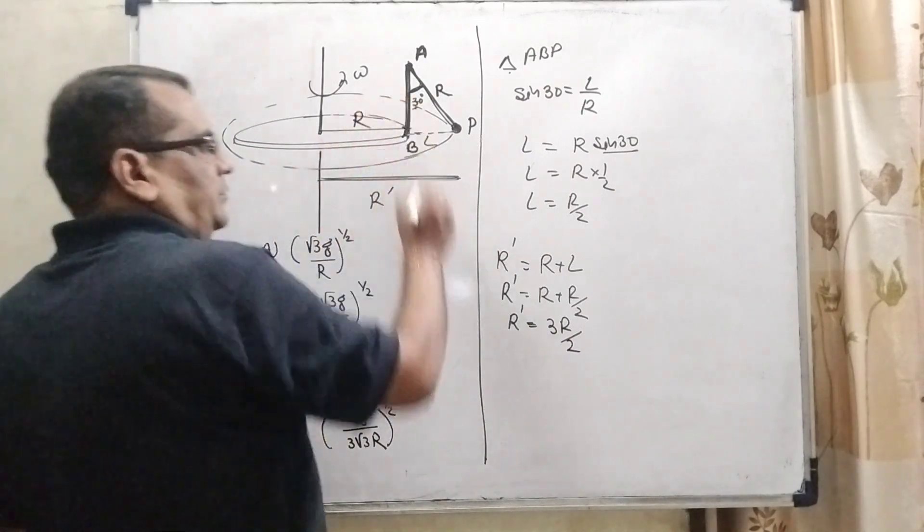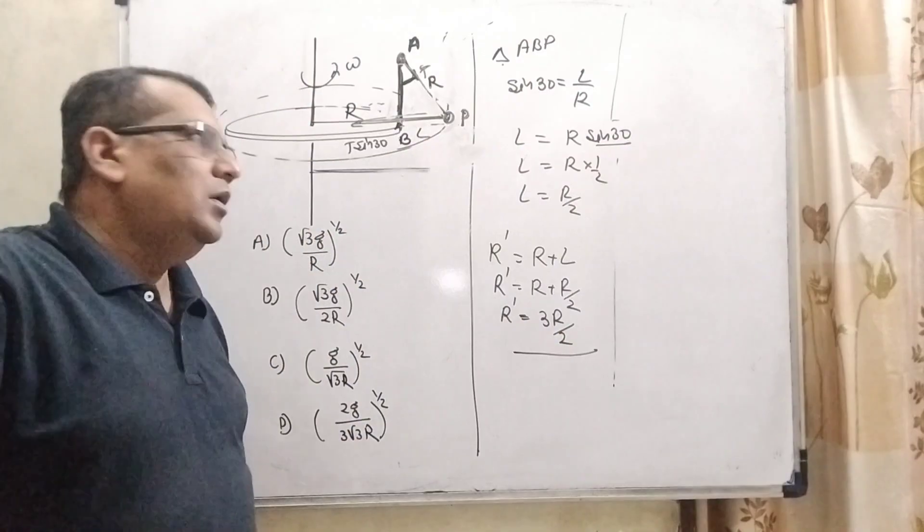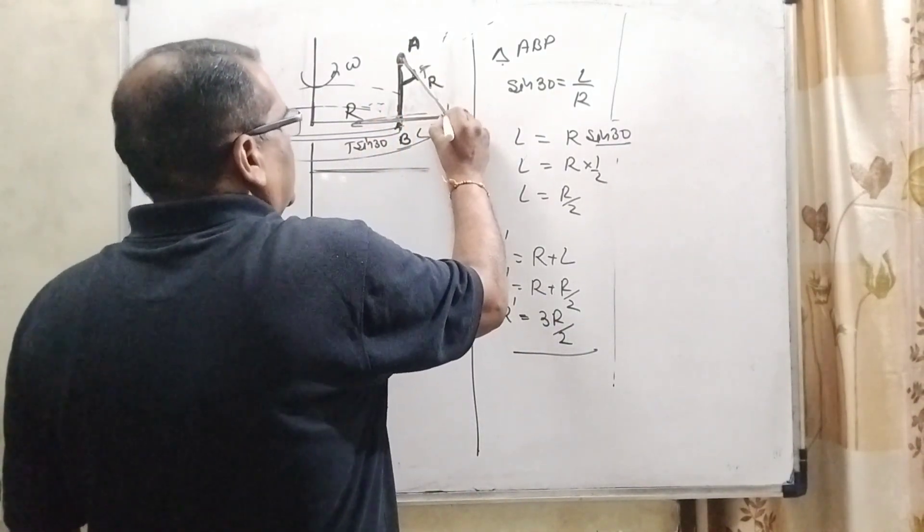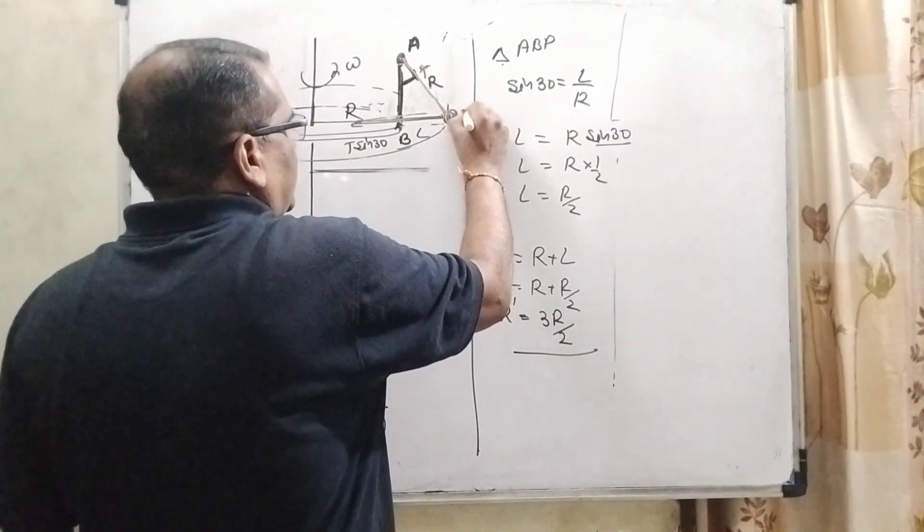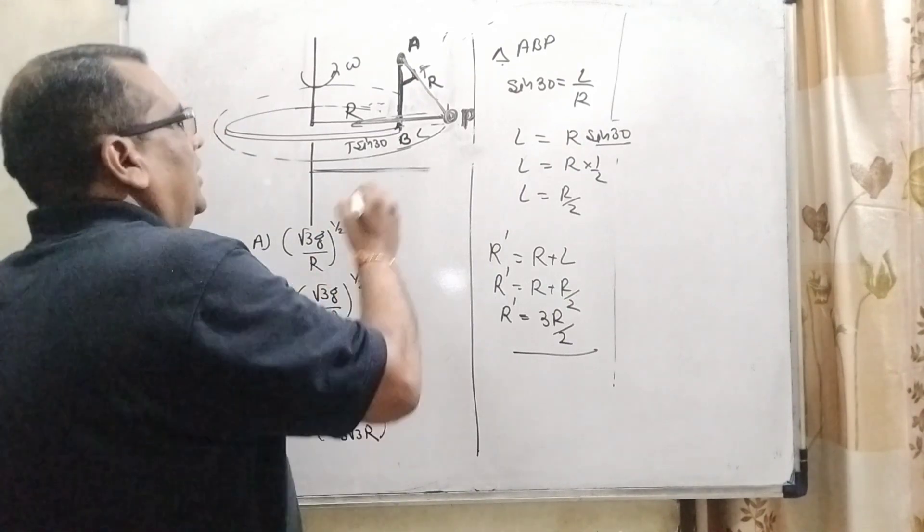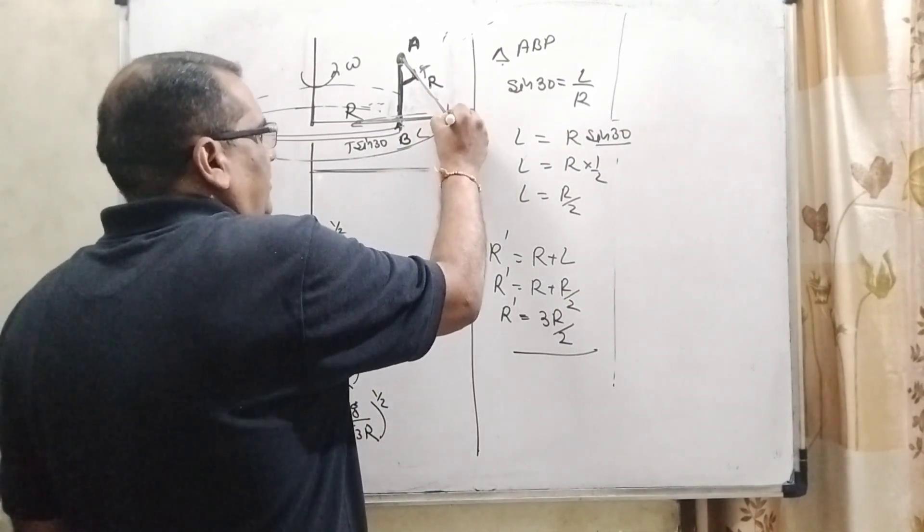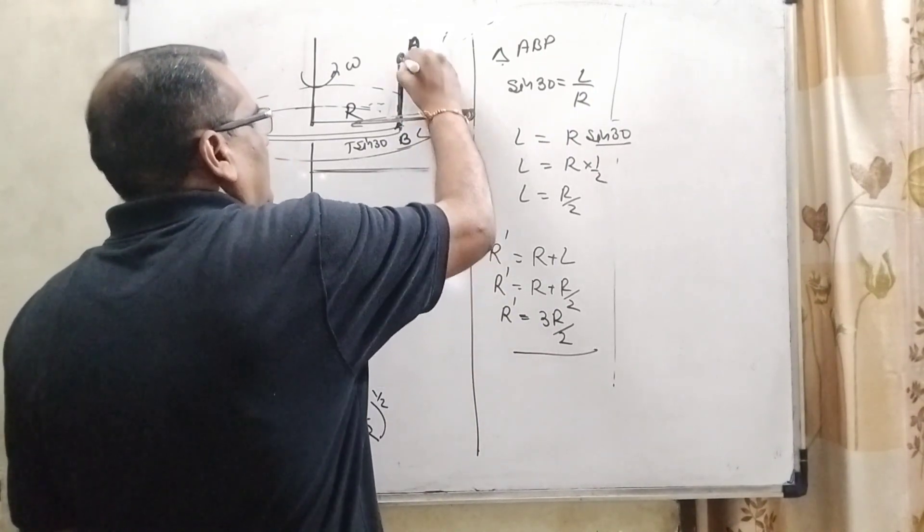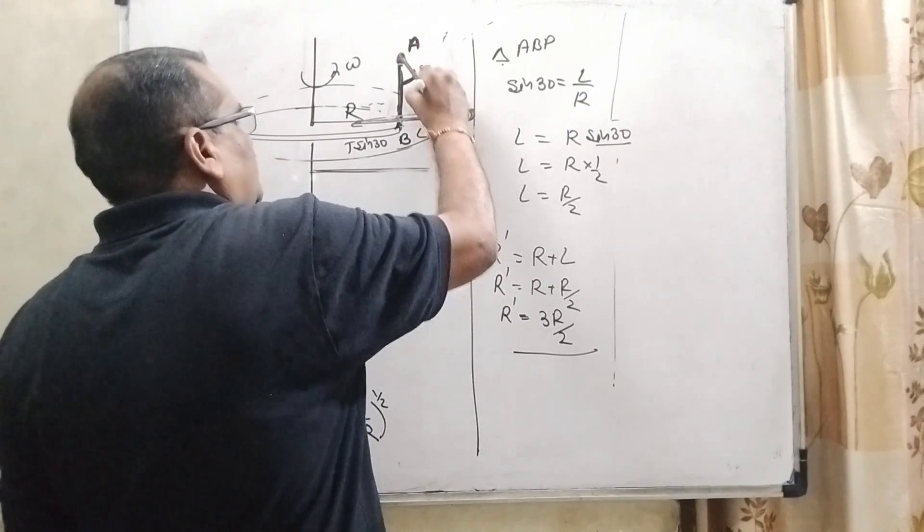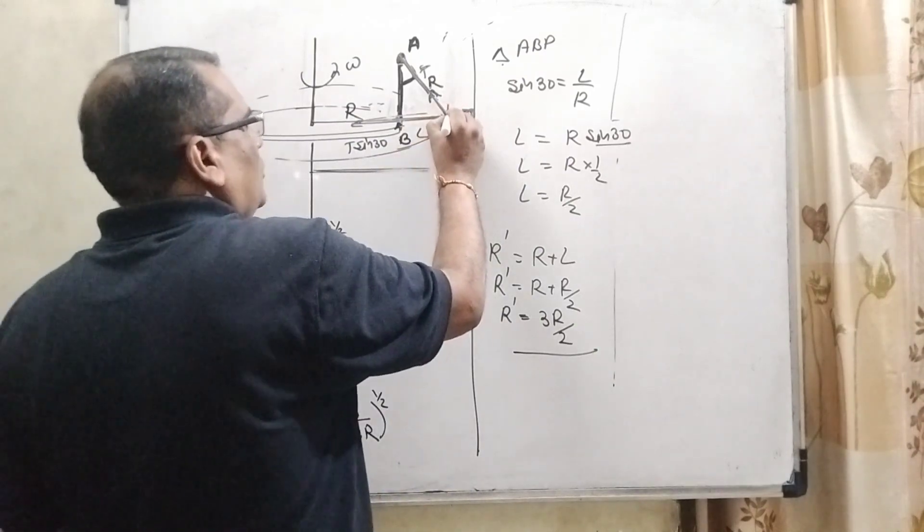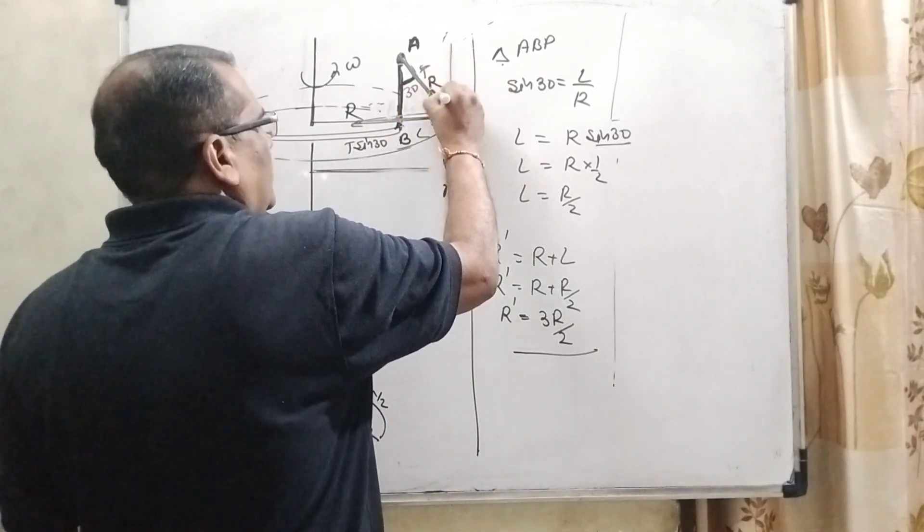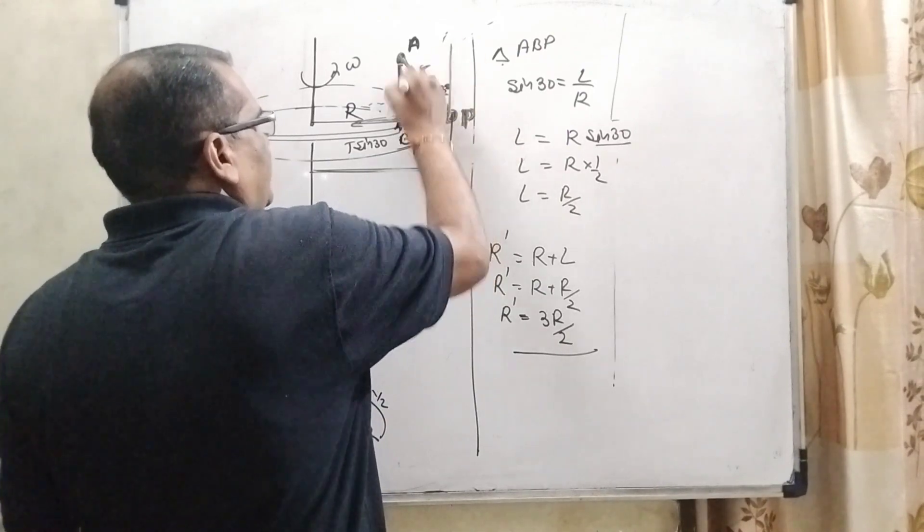Now, we have to draw the free body diagram of the pendulum that is the point P. Here, weight of this pendulum is acting downward direction. Here the tension of the string is acting towards A. So, therefore resolving in two components. It is 30 degree. So, it is also 30 degree because the line is parallel.